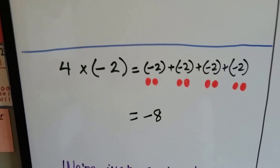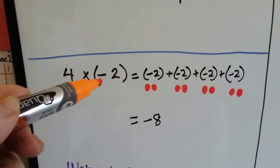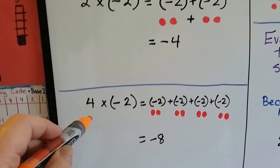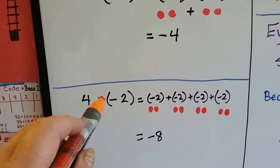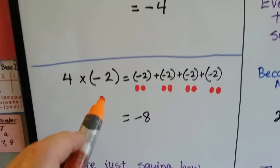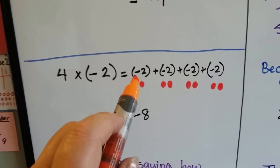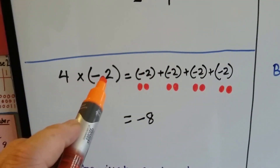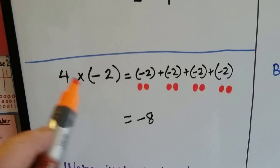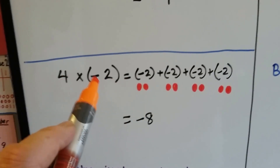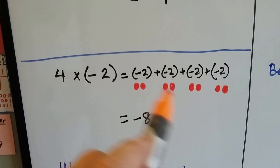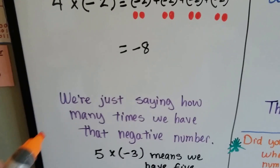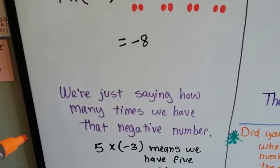If we've got 4 times negative 2, that means we've got four of these negative 2s. Here's 1, here's 2, here's 3, here's 4. It's the same thing as if we had 4 times 2 — we'd have four 2s. It's just now we have 4 negative 2s. So now we have negative 8. We're just saying how many times we have that negative number.